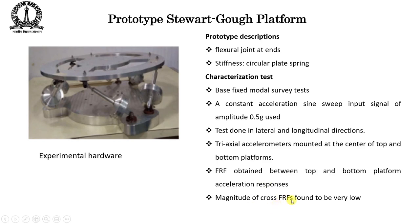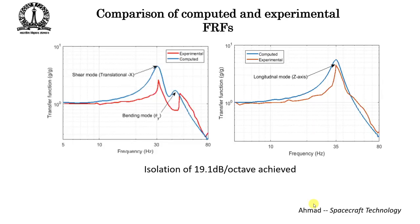The frequency response function (FRF) was obtained between the top and bottom platform from acceleration measurements. The magnitude of cross-FRFs between different excitation directions was found to be small. The computed FRF (from the CAD model) shows resonance around 30 Hz followed by roll-off, while the experimental FRF (red curve) is of similar shape — with resonance slightly above 30 Hz — showing a dip and rise due to another mode in both the computed and experimental results.